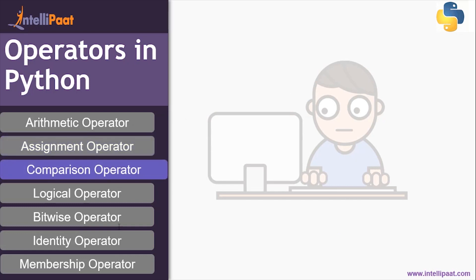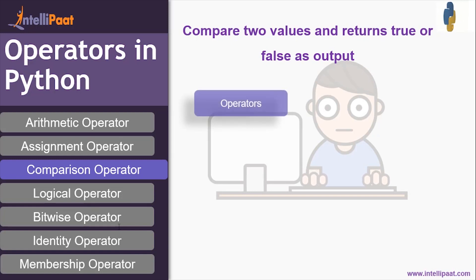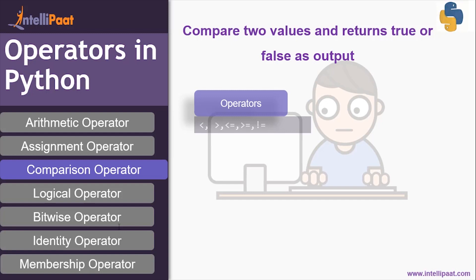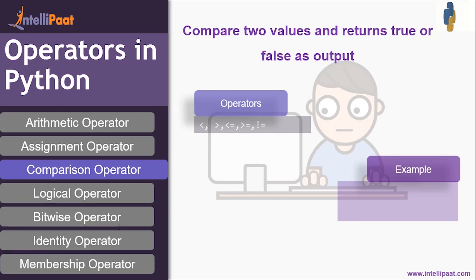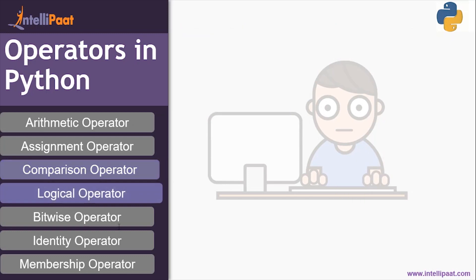Next we have the comparison operator. It is used to compare two values and it returns True or False as the output. The operators which are part of it are less than, greater than, less than or equal to, greater than or equal to, and not equal to. For example: a = 10, b = 20, is a greater than b? Obviously 10 is not greater than 20, so it gives False as the output.